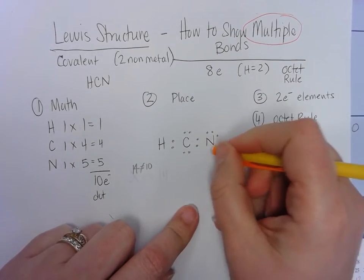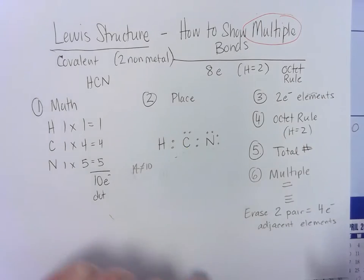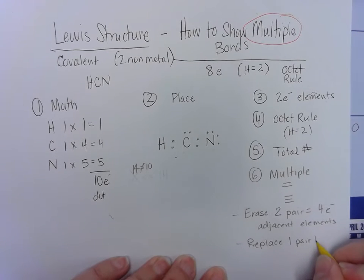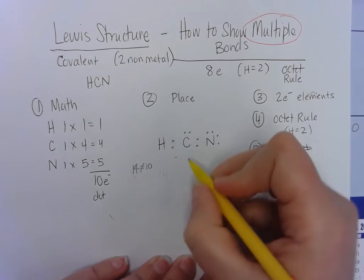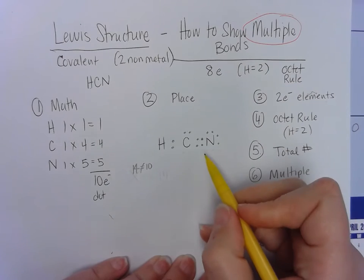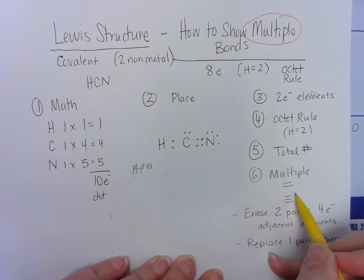So we can't erase off the hydrogen and the nitrogen. We have to erase off of two that are side by side. I'm going to erase off the bottom of the nitrogen and the bottom of the carbon. And then I am going to replace one pair between them. So I erased here and here, and I'm going to put one pair back in between. So, I have, in between this carbon and nitrogen, I have four electrons, which is a double bond.